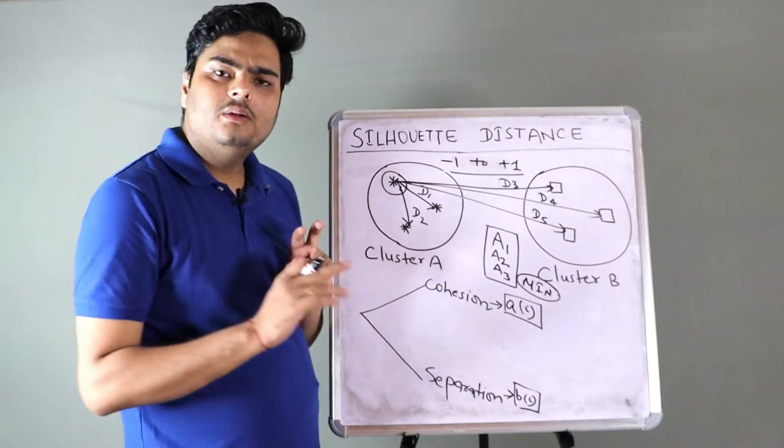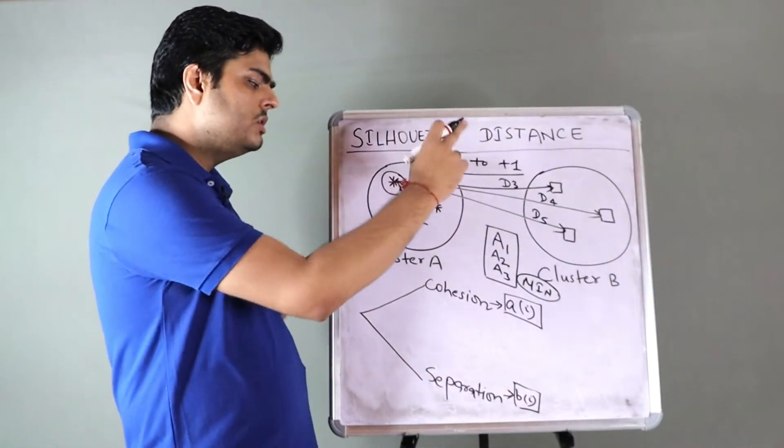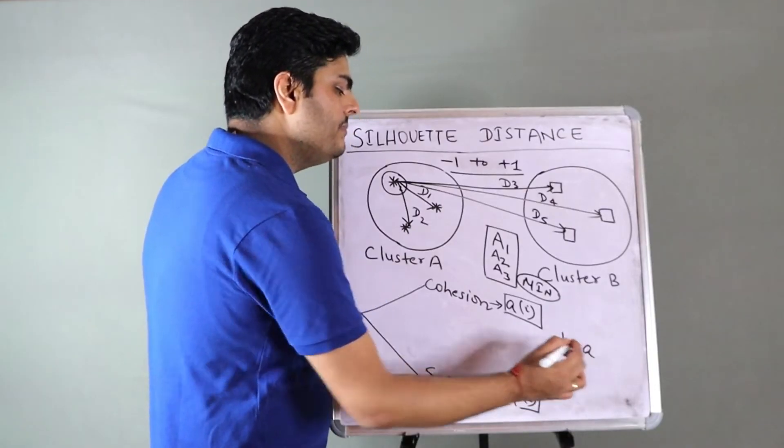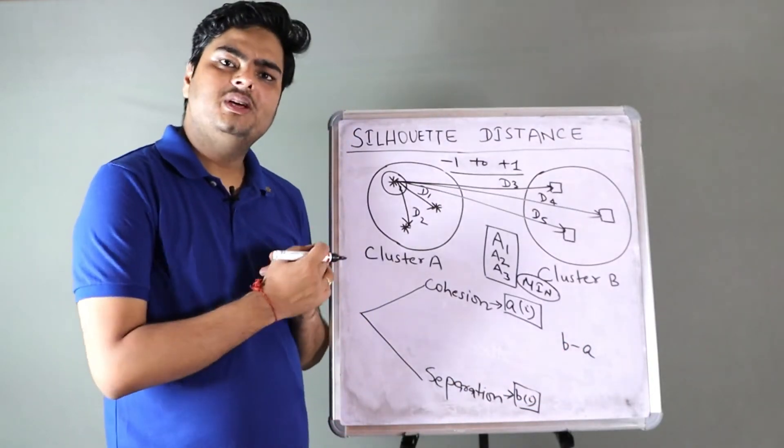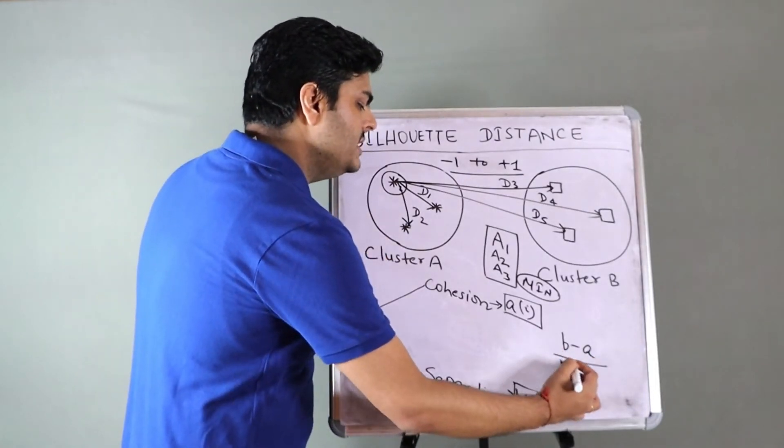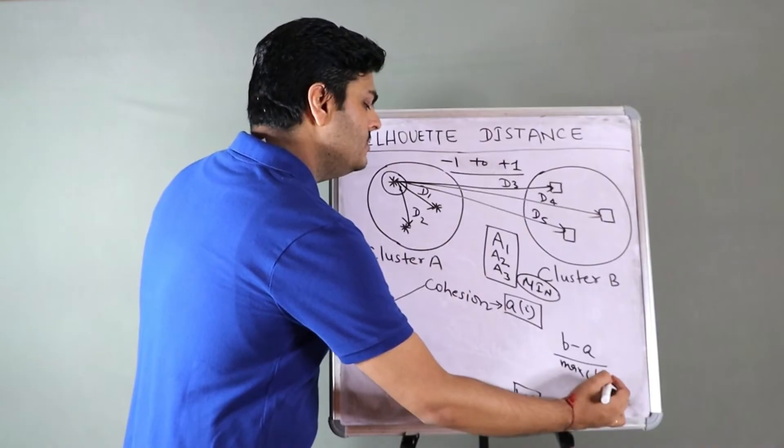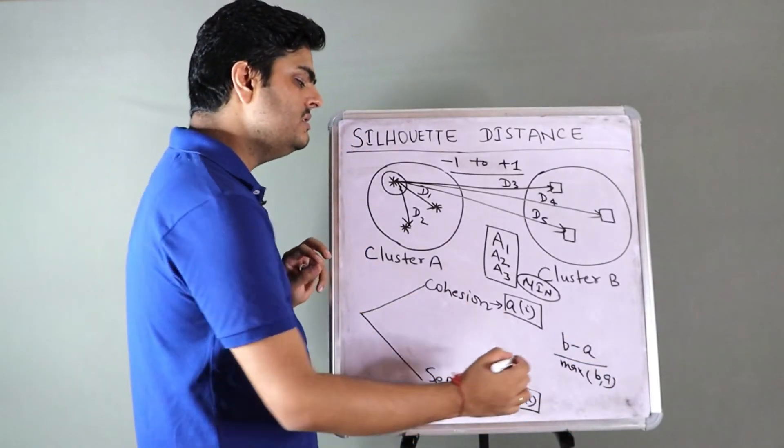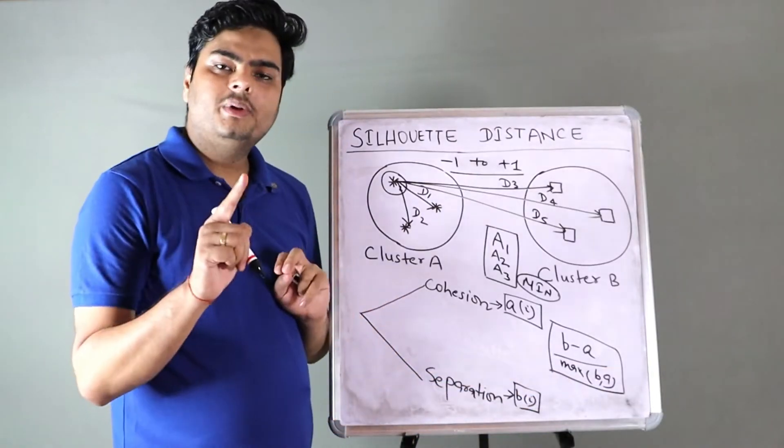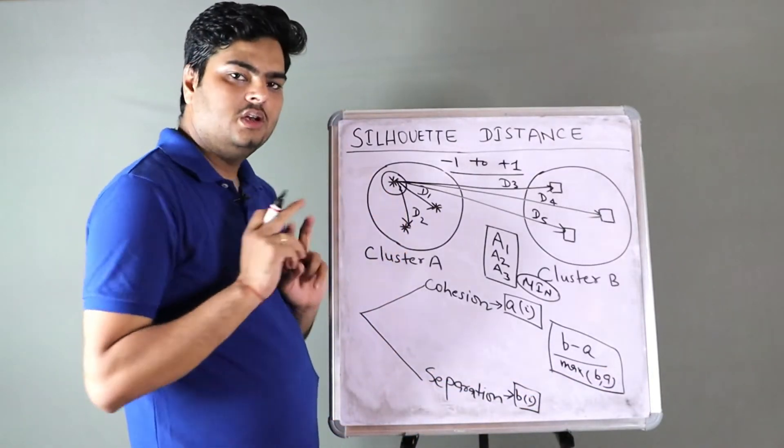If there are three clusters, A2 will also come. If there are four clusters, A3 will also come. But end of it, the formula remains same. See the distance of this point from all the points in that cluster. Take the average. And what is this BI? It is nothing but minimum of all these averages.